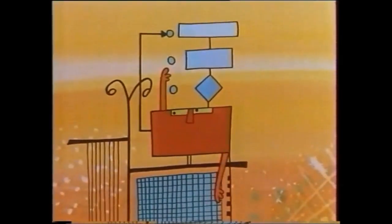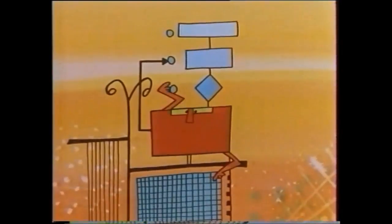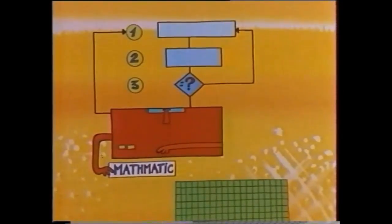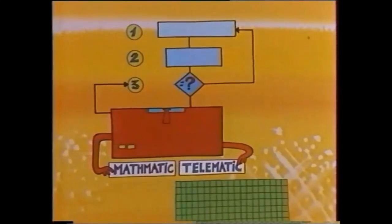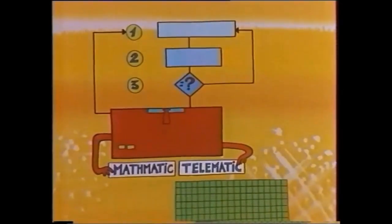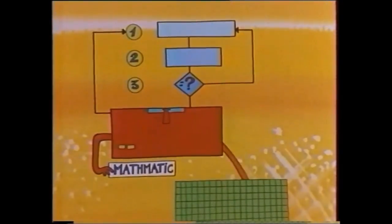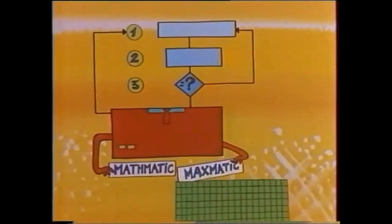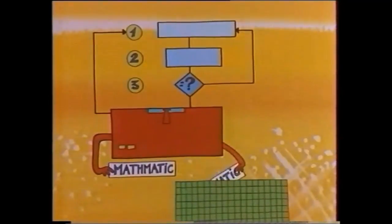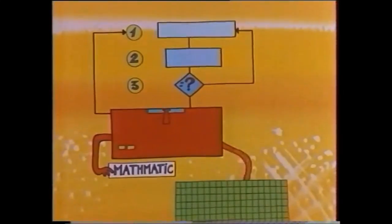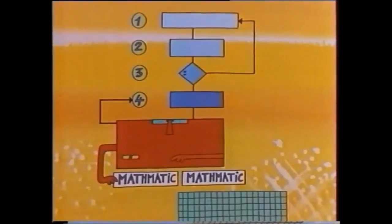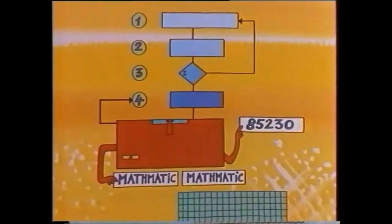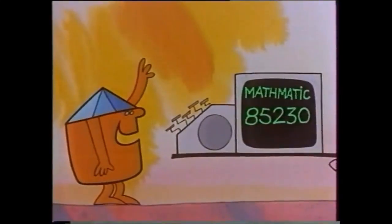It's the CPU that reads and executes each instruction in the program. Here is how it does it: Step one — go into the memory and get the first name on the list. Step two — compare this name to the name it's looking for. Step three — are they the same? No? Then go back to step one and get the next name on the list. Step two — compare. Step three — the same? No? And so on, until the two names are the same. Then go to step four: take the telephone number and display it at the output. Cinematic is happy — he's got the number he wanted right in front of his eyes.